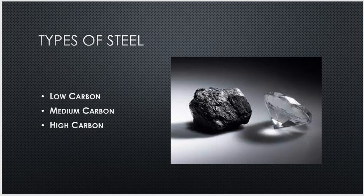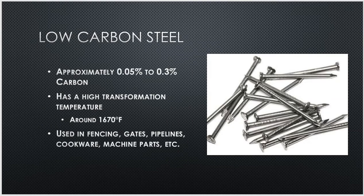When talking about the amount of carbon in the steel we're working with, we have to know that there are essentially three types of carbon steel: low carbon, medium carbon, and high carbon. Low carbon steel would have about 0.05 to 0.3% carbon — the rest is iron and trace amounts of other alloying elements. Low carbon steel has a high transformation temperature, occurring around 1,670 degrees Fahrenheit. You might see low carbon steel used in things like fasteners, bolts, nuts, nails, fencing, pipelines, cookware, and certain machine parts.